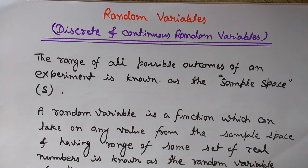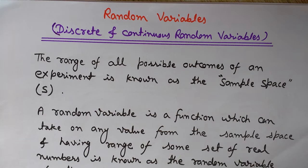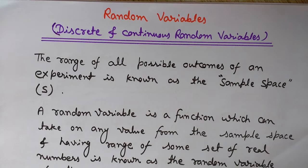Hi friends, welcome to Engineering Made Easy. I am Lalithiv. Today we will discuss random variables — what are discrete random variables and continuous random variables. These are two types of random variables, so we will discuss both kinds here. But before knowing what random variables are, let me tell you some terminologies that will be used.